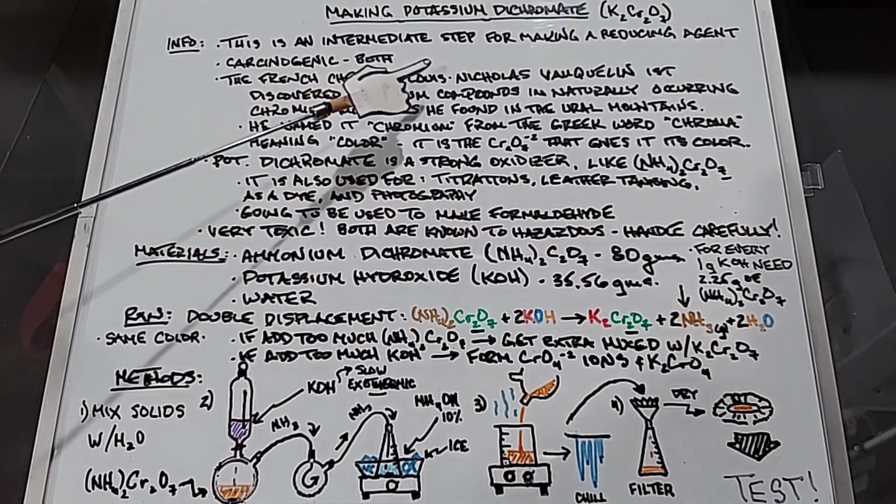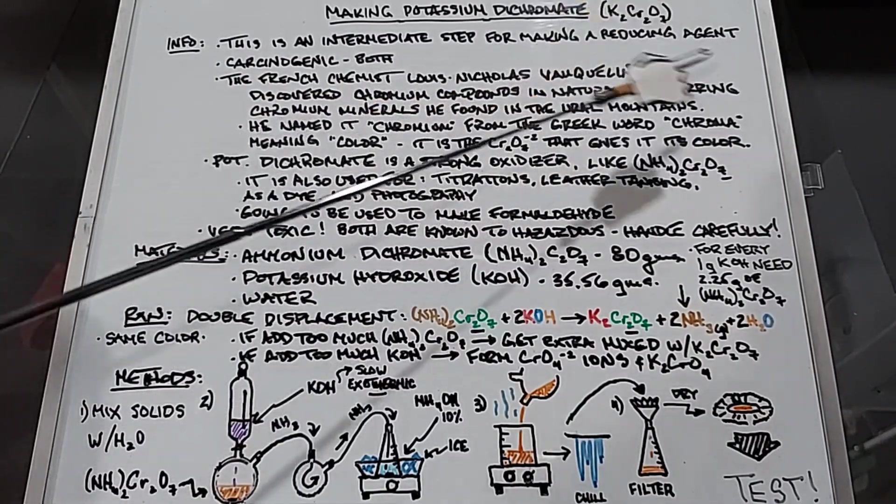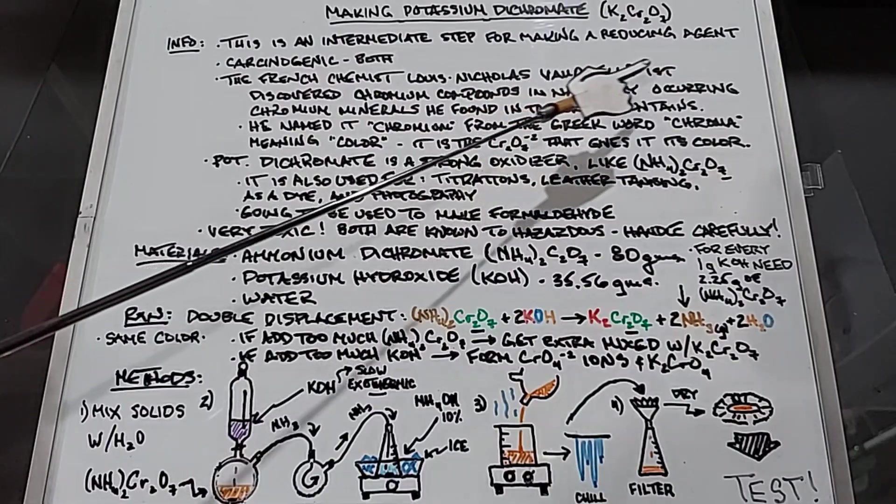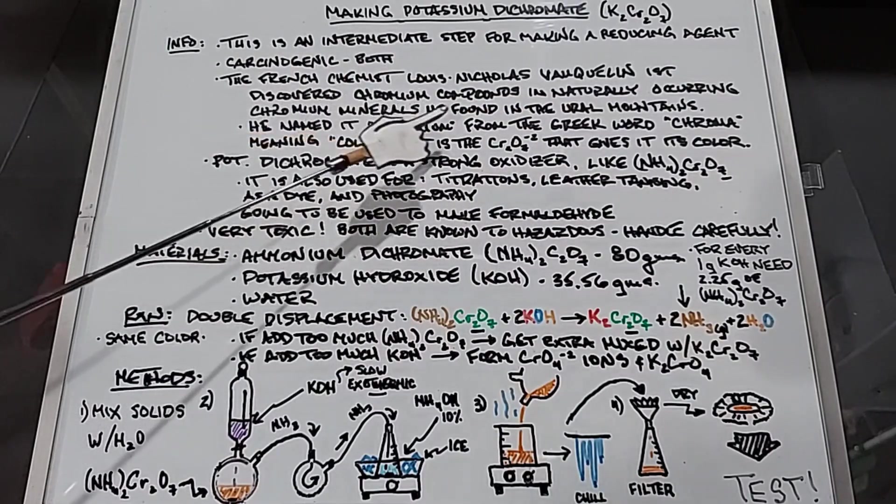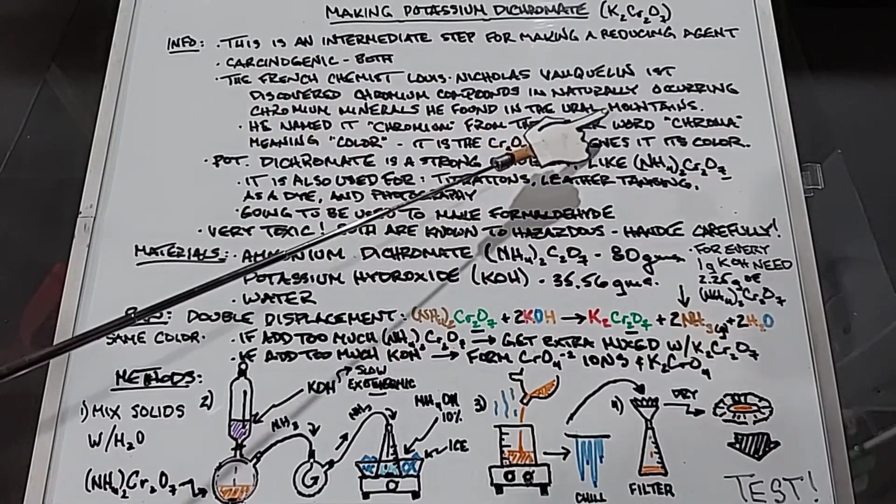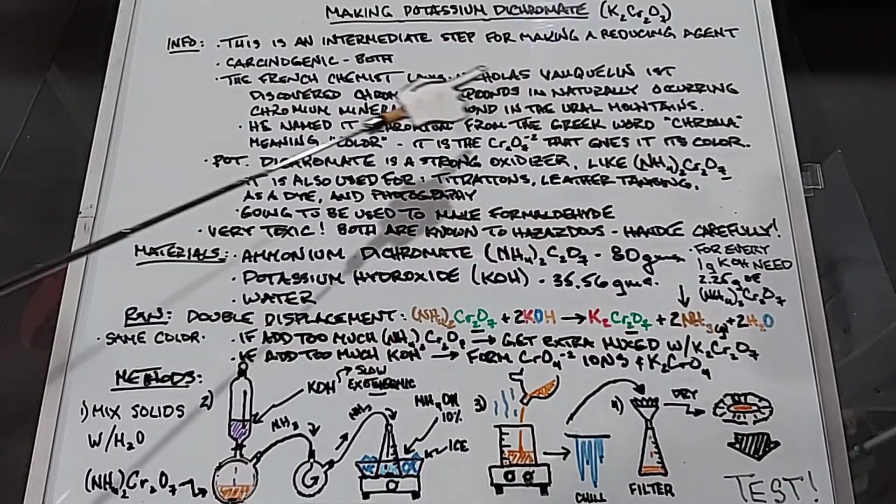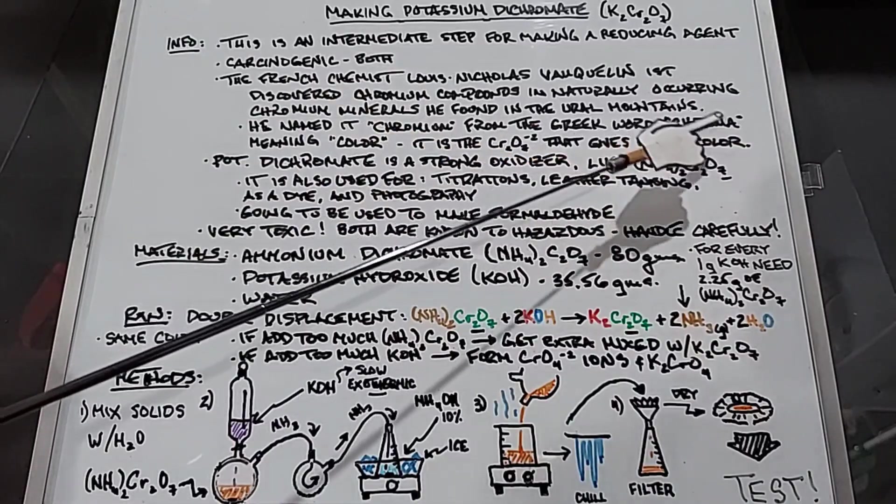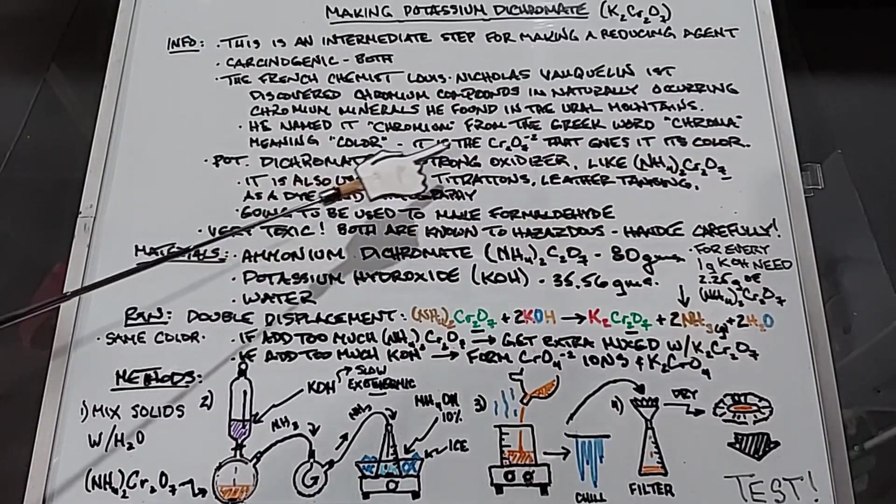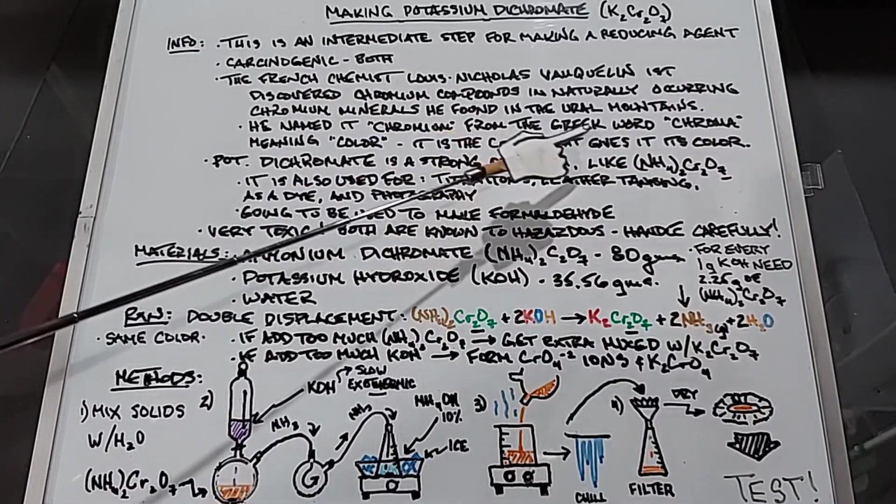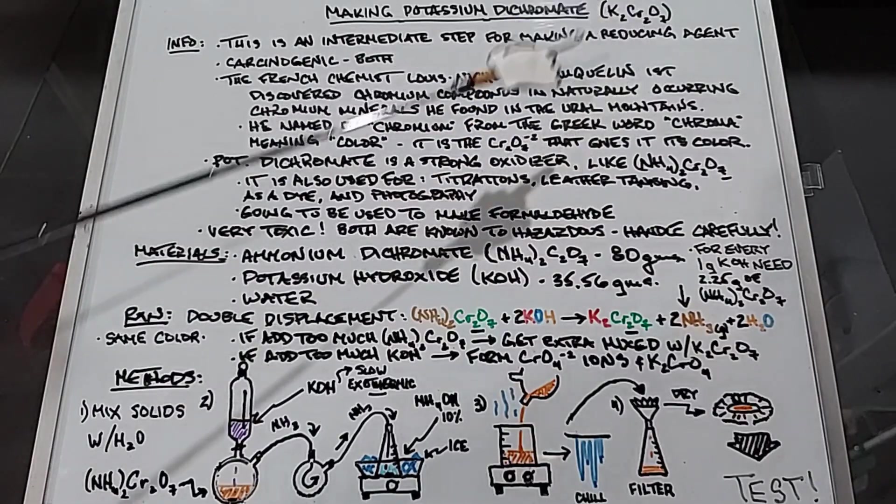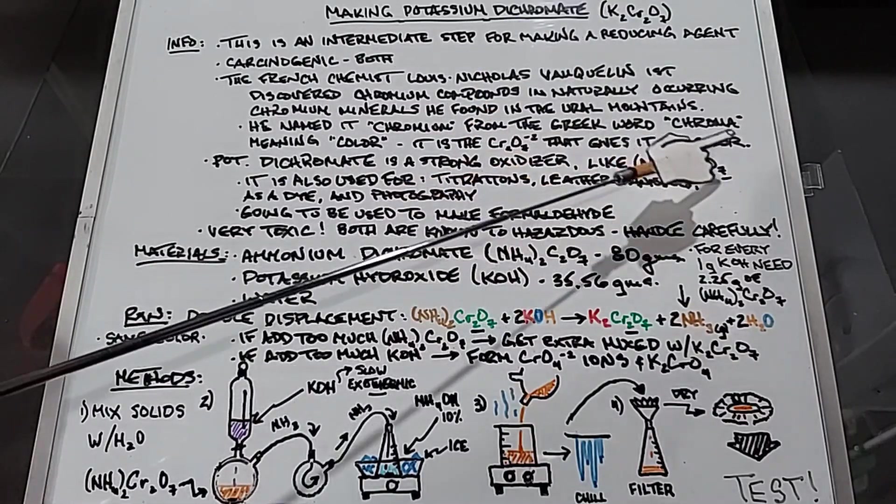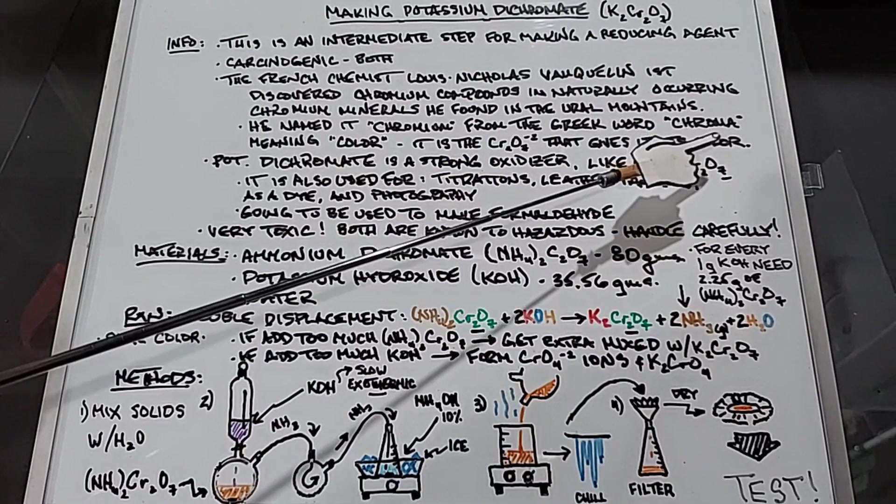Some quick history here. The French chemist Louis-Nicolas Vauquelin first discovered chromium compounds in naturally occurring minerals he found in the Ural Mountains. He named it chromium because it comes from the Greek word chroma, meaning color. The Cr2O7 component of both potassium and ammonium dichromate gives it its color, which is orange or reddish orange.